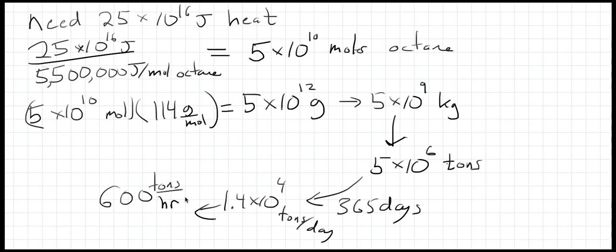So if we wanted to have some sort of primitive steam engine that could supply as much power as Diablo Canyon does and had a very low Carnot efficiency because the high temperature is so low and the low temperature is so high, we'd have to supply 600 metric tons of octane, basically gasoline, to that power plant every hour to keep it running.